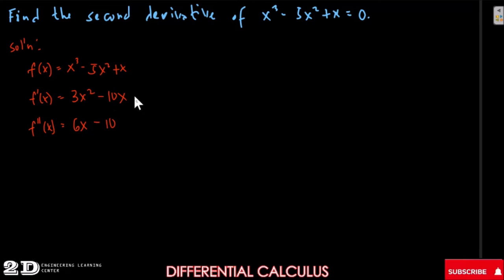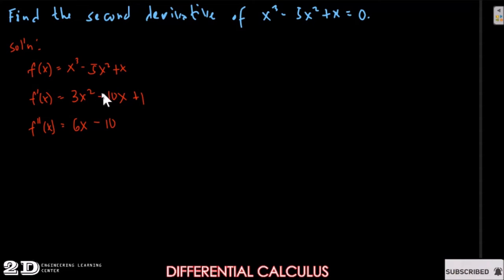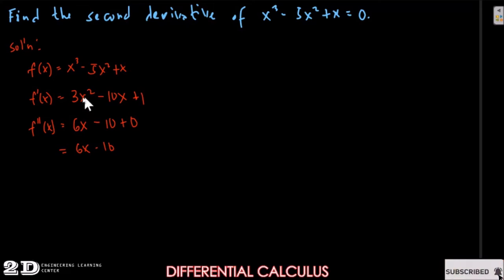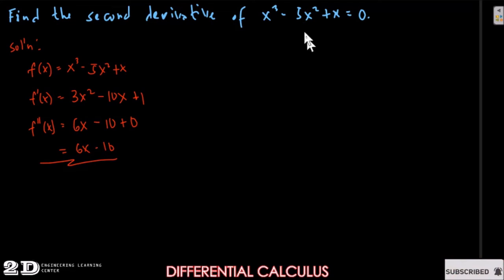We also have plus 1 from the original function, but its derivative becomes 0, so it drops out. Our final answer will be 6x minus 10. That is our second derivative for this function.